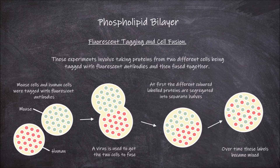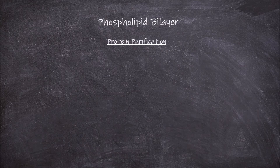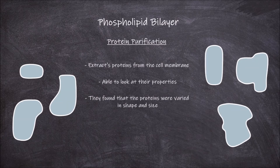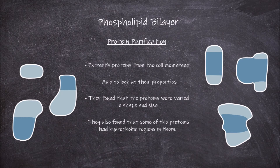Another technique that helped falsify the Davson-Danielli model was protein purification. With the gained ability to extract proteins from the cell membrane, scientists were able to look at their properties. They found that the proteins were varied in shape and size, and that some had hydrophobic regions. This contrasts with the Davson-Danielli model, which had proteins being mostly uniform in shape and size bordering the membrane, and also had them being hydrophilic around this edge.